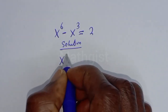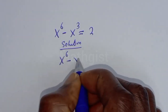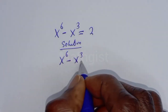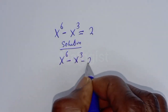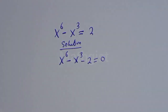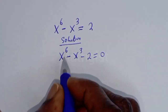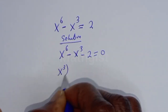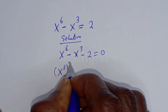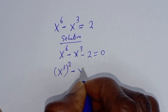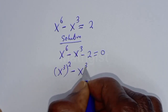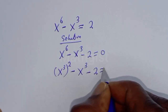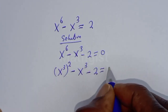We have s raised to power 6 minus s raised to power 3. If you take this to this side, it becomes minus 2 is equal to 0. s raised to power 6 can be written as s raised to power 3 squared, so s raised to power 3 squared minus s raised to power 3 minus 2 is equal to 0.